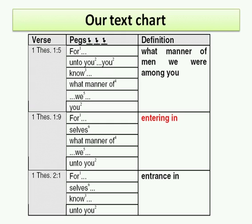In 1 Thessalonians 1 verse 9, we find the pegs — the umbrella phrases — for, ourselves, what manner of, we, unto you. Now these phrases carry the phrase 'entering in.' In 1 Thessalonians 2 verse 1, we find the pegs: for, ourselves, know, unto you. And these carry the phrase 'entrance in.'